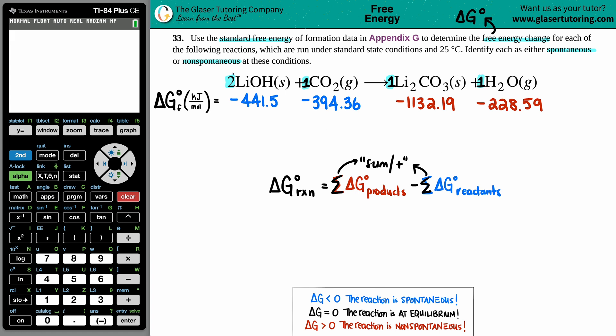Let's fill in those no numbers. Keep in mind that if you don't see a number, that's always just one. You have one CO₂, one Li₂CO₃, one H₂O. You're going to take that value and multiply your ΔG value with it. So -441.5 times two because the coefficient was a two, -394.36 times by one, -1132.19 times by one, and -228.59 for the H₂O times by one.